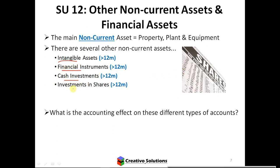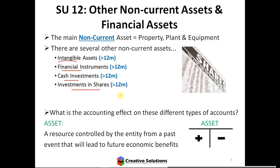Financial instruments would be like shares, bonds, cash investments, and investments in shares. What is the accounting effect on these types of accounts? They're all assets — increase on the debit side, decrease on credit. If I'm buying an asset I'm going to debit it; if I'm selling an asset it's going to be a credit decrease. They're all assets.